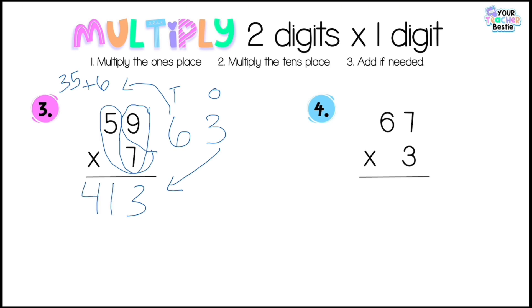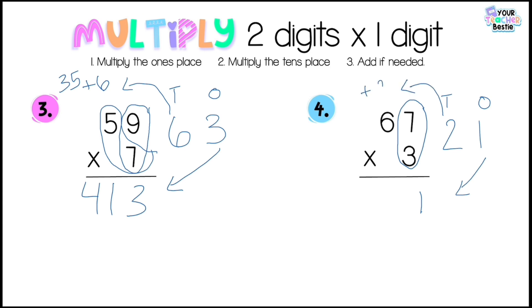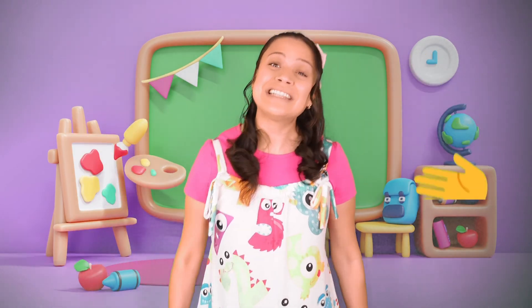Problem four: 67 times 3. Step one: multiply the ones place — butterfly wing — 7 times 3 is 21. The 1 goes to the ones place and the 2 goes up to the tens place with a plus. Step two: multiply the tens place — 6 times 3 is 18. Step three: add — 18 plus 2 is 20. Our final answer is 201.